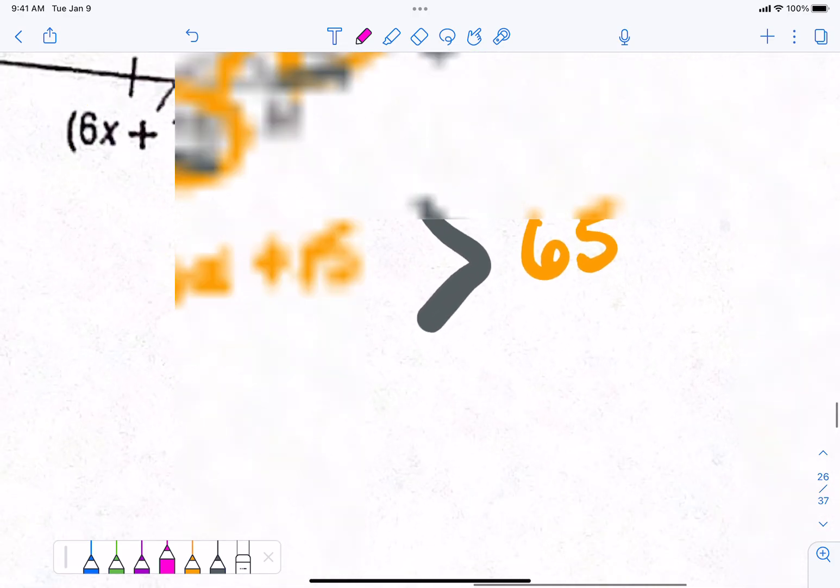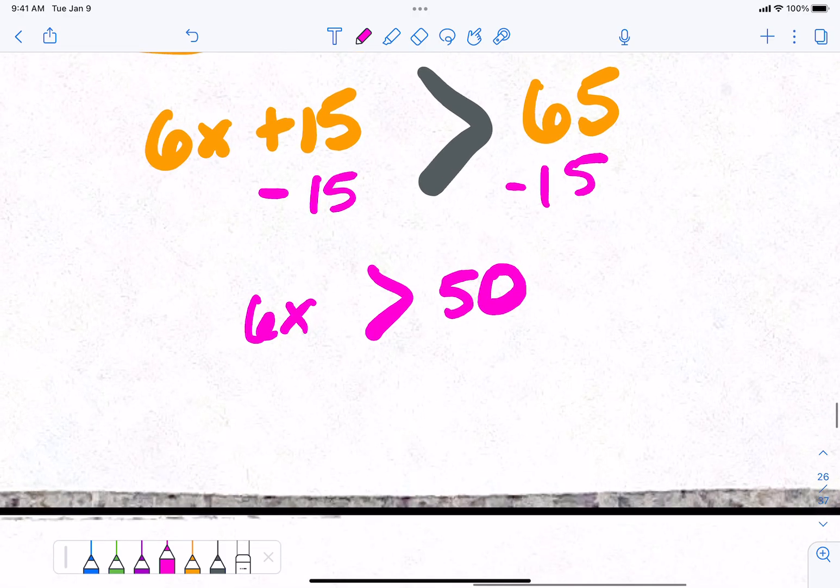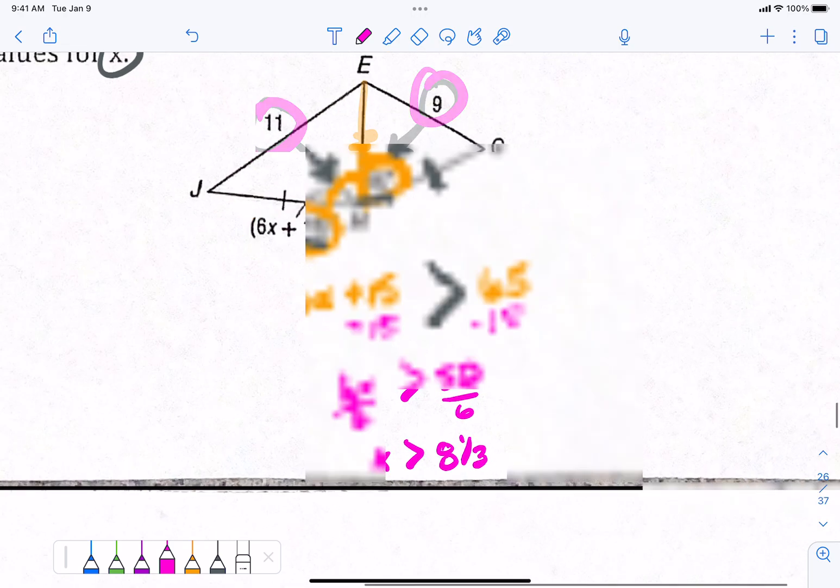Let's solve for x. I'm going to subtract 15, and 6x has to be bigger than, what's that? 50. All right, 50 doesn't divide by 6 nicely. We're just going to leave it. We'll solve it. x is greater than 50 divided by 6 is like 8 and 1/3, right? x has to be greater than 8 and 1/3 because that has to be bigger than 65.